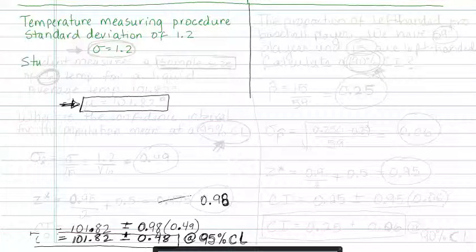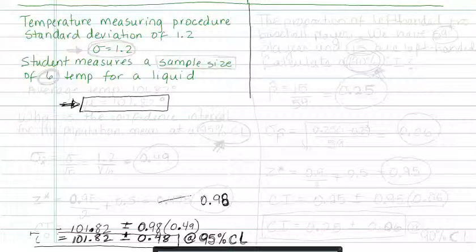Let's say that a student measures a sample size of six temperatures for a liquid and she gets an average boiling temperature of 101.82 degrees. What they have just given you is mu. Remember mu is the same for the population and for the sampling distribution, so this is our mu.